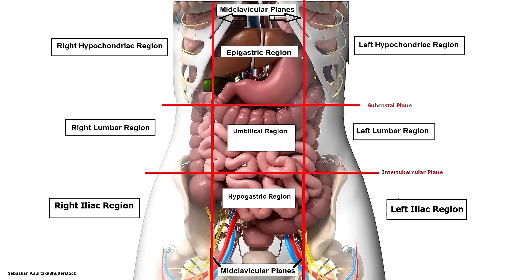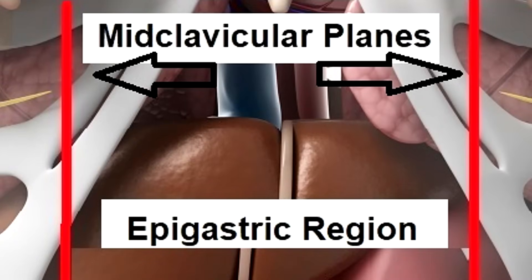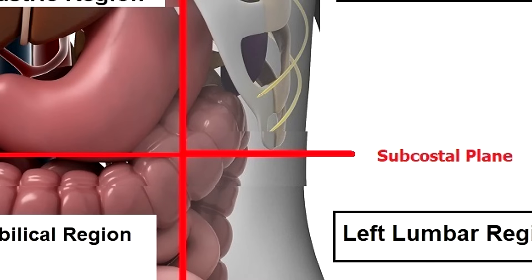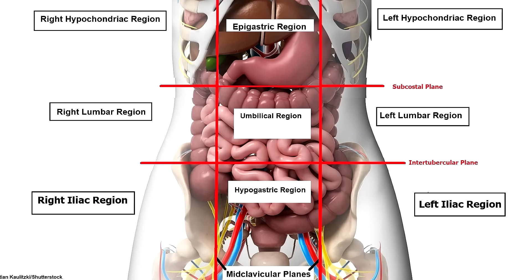Now, let's talk about the nine abdominal regions. These regions divide the abdomen into even smaller sections by using two parasagittal planes that run down the middle of the clavicle bone, also called mid-clavicular planes, and two horizontal or transverse planes. The superior transverse plane is called the subcostal plane, and it is located just below the ribs. The intertubercular plane is the inferior transverse plane, and it intersects the tubercles of the pelvis running just inferior to the navel.